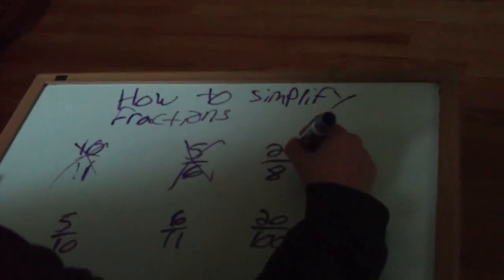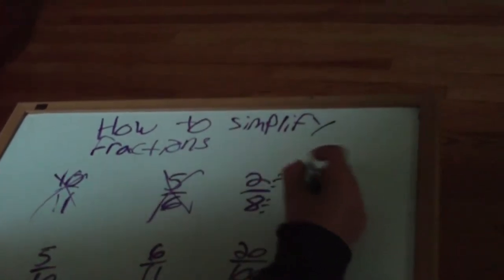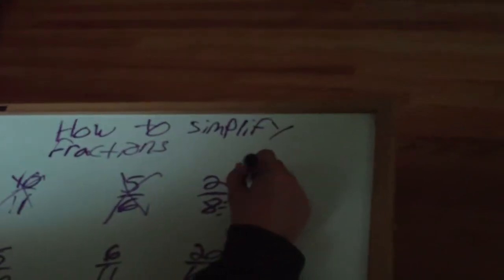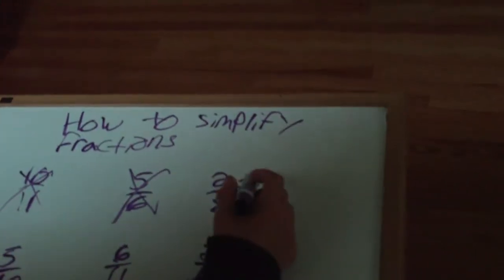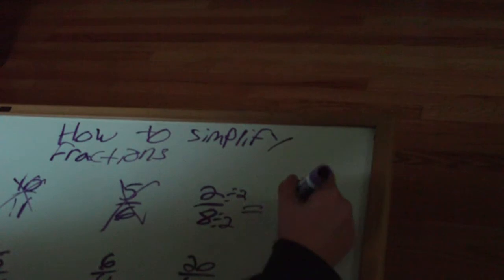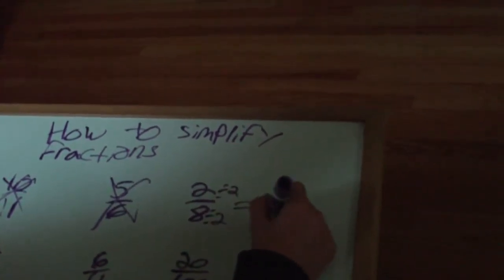2/8, yes, can be. I would put a divide sign next to it. Divide it by 2, divide it by 2. If you have to do it at the top, you have to do it at the bottom. 2 divided by 2 is 1, 8 divided by 2 is 4. That's simplified right there.